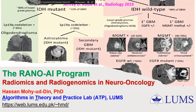The topic we're going to discuss is basically the RANO AI program, which stands for Radiomics and Radiogenomics in Neuro-Oncology. That's a research program my lab at LUMS — Algorithms in Theory and Practice — has been working on for quite some time. Our main scope is towards computational clinical algorithms that are effective. We try to understand how and why these algorithms behave the way they do, recognize variability or instability due to certain factors, and find simple solutions to mitigate that variability.